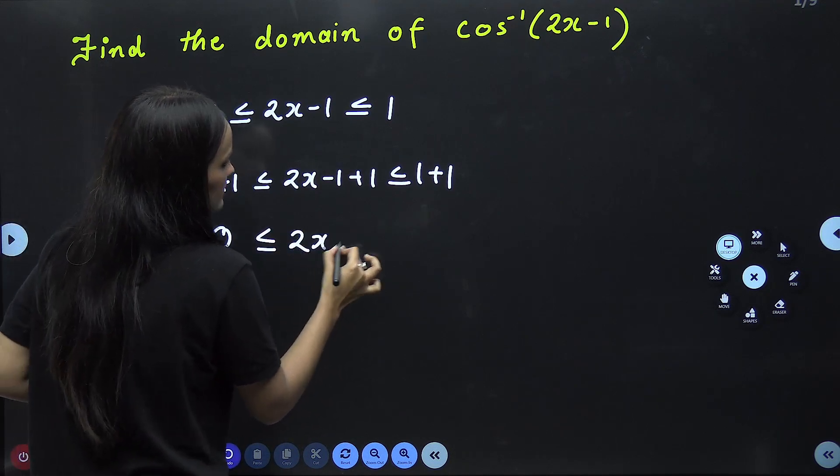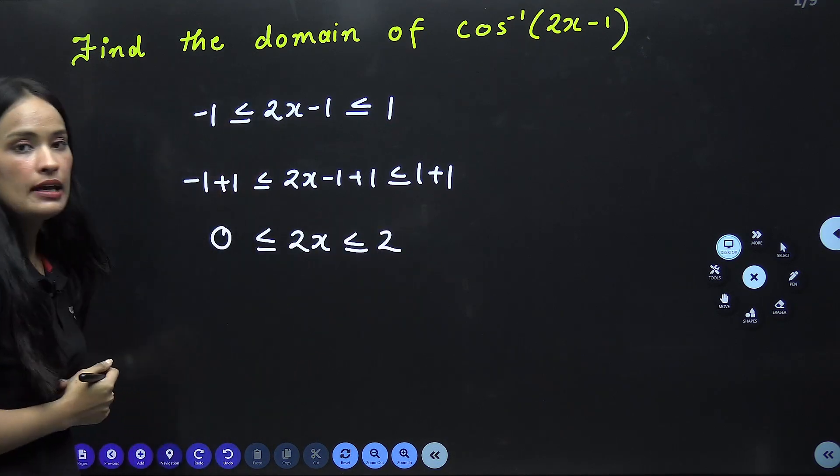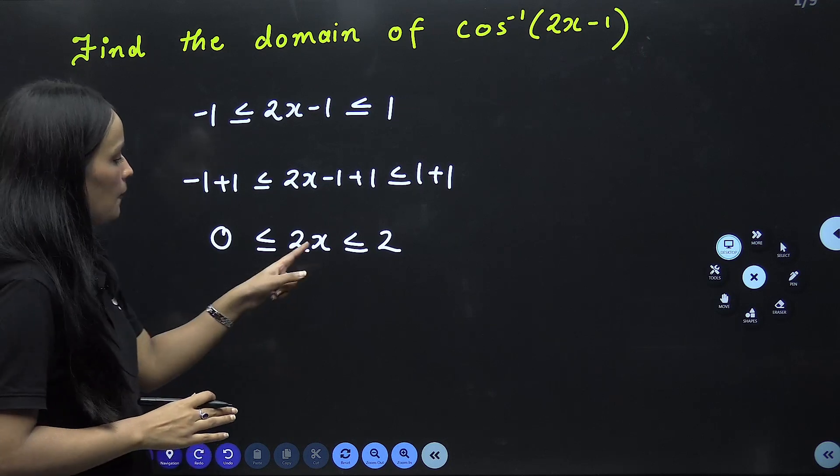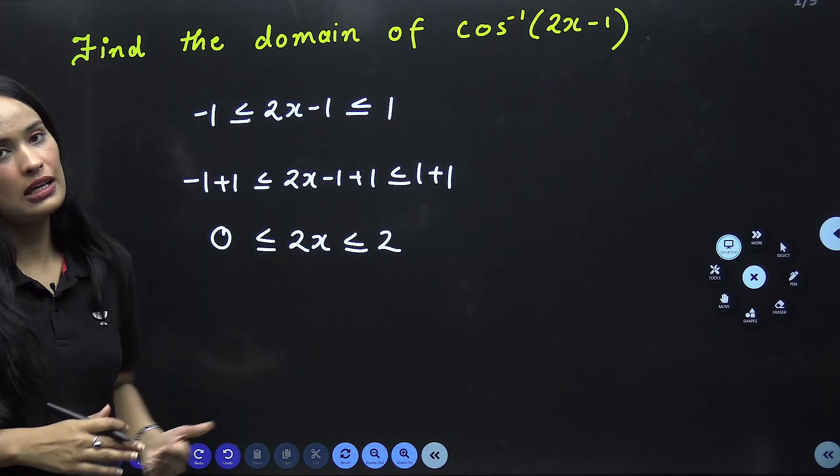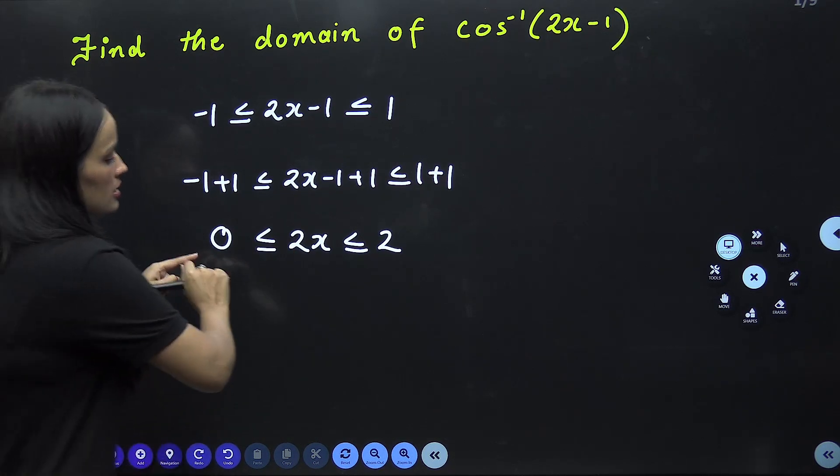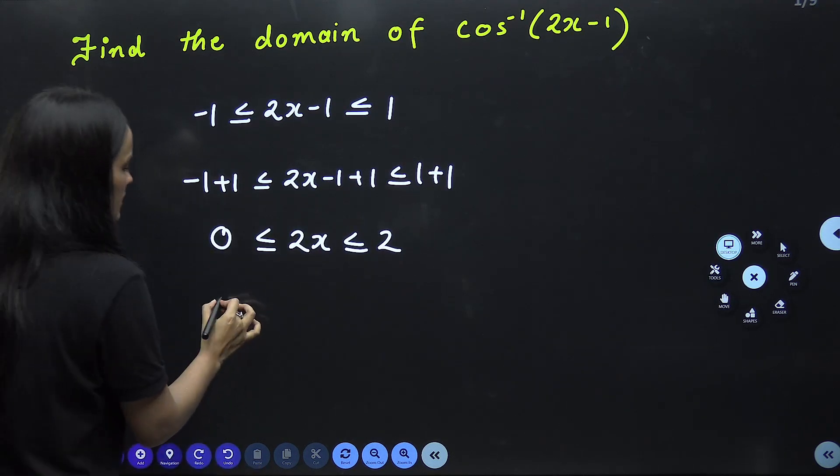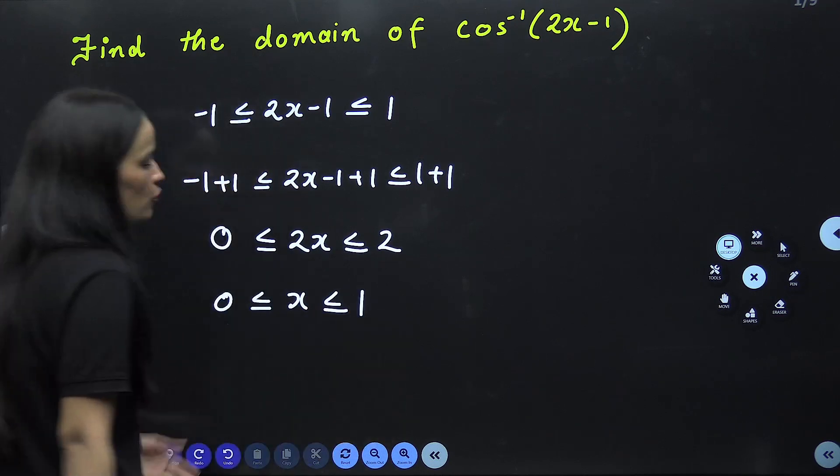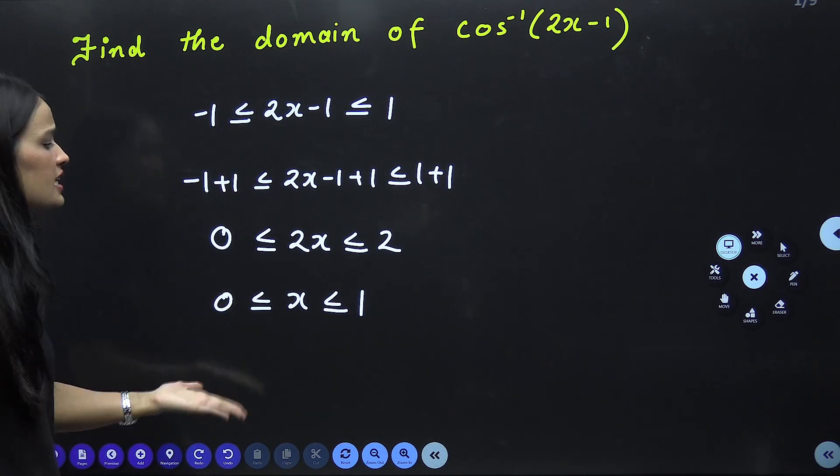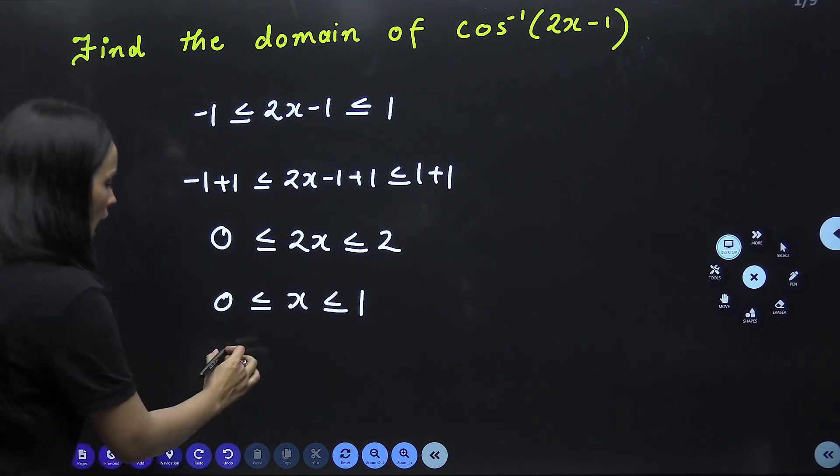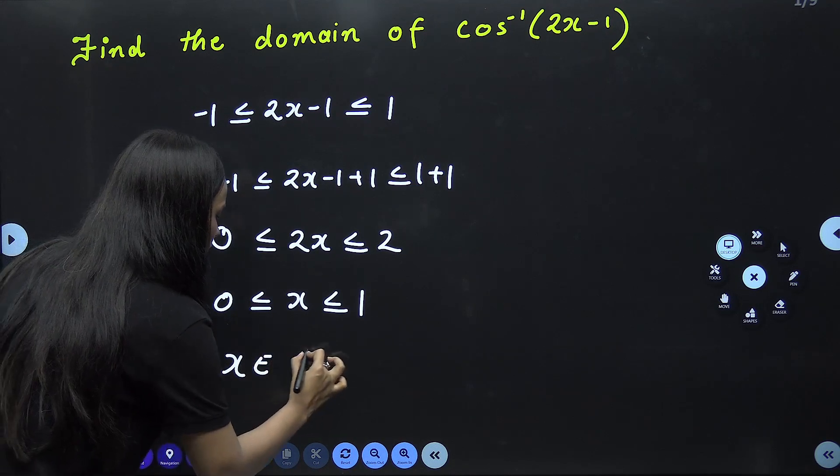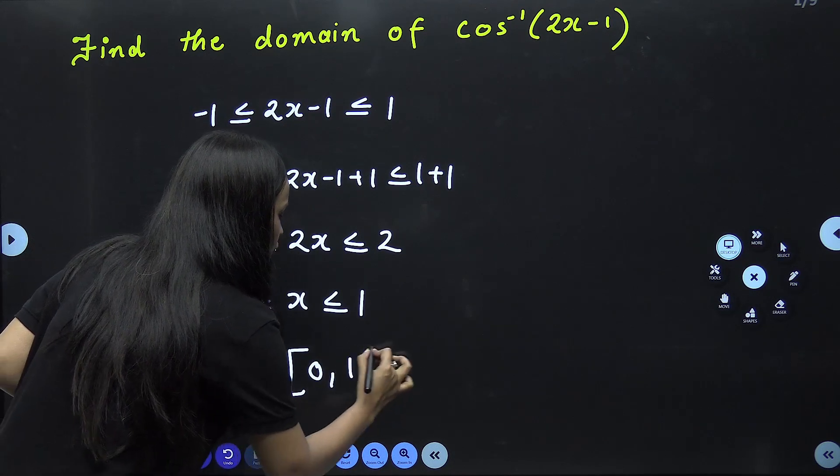0, 2x, 2. Now x is not single. You have to remove this 2. So how will this 2 be removed? When you divide the entire inequality by 2. So when you divide by 2, what will you get? You will get something like this.